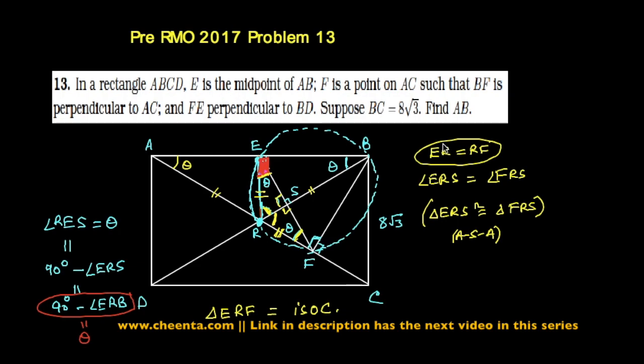You can try to show this on your own as an exercise. So these two—that would mean that angle ERS, which is this one, and angle FRS, which is here—these two angles are equal.